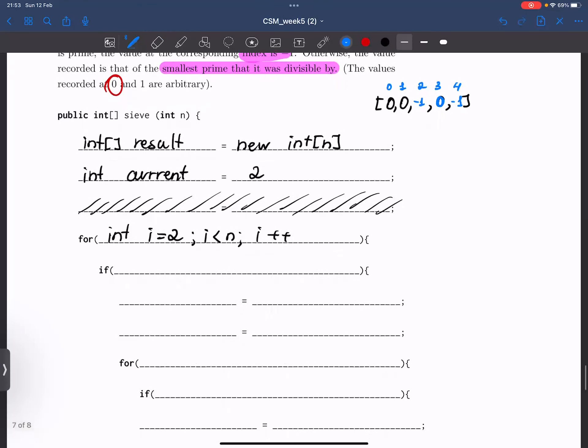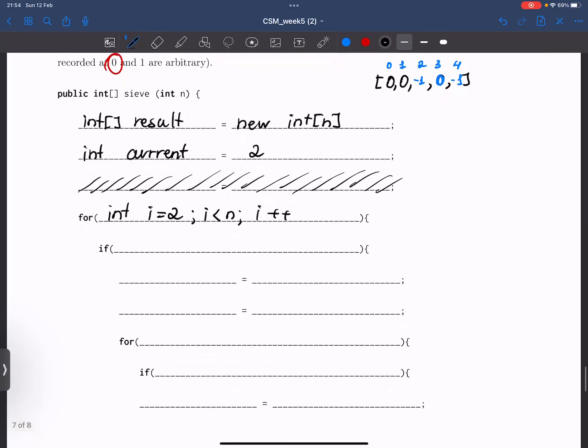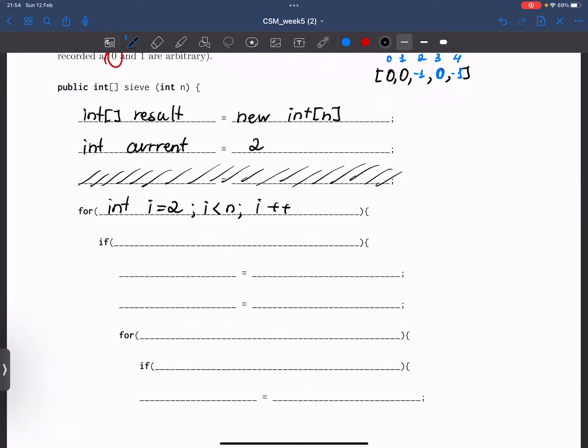So we can implement this by using the following lines. So if result[i] was equal equal to 0, we're going to change our current to this i. And result[i] at this index is going to become minus 1, because that means that our current is a prime number.